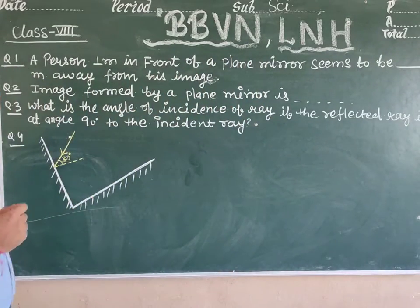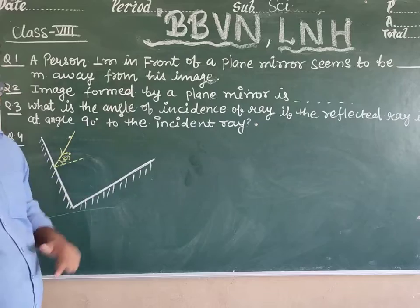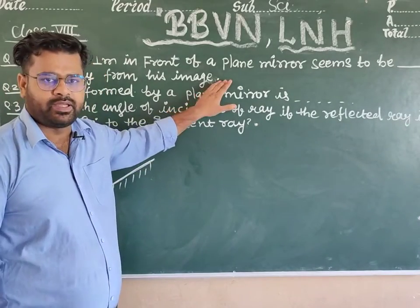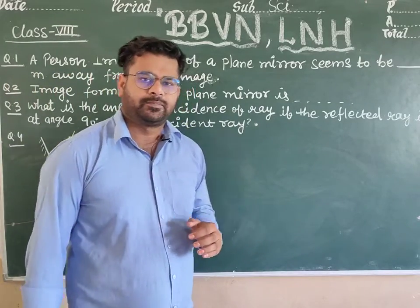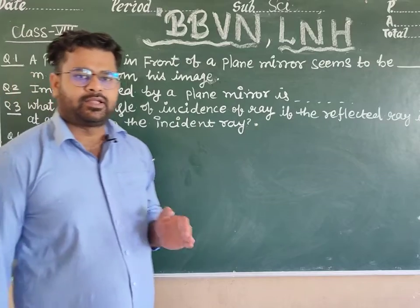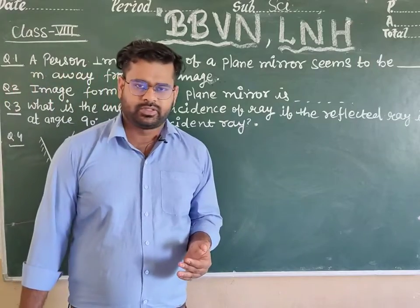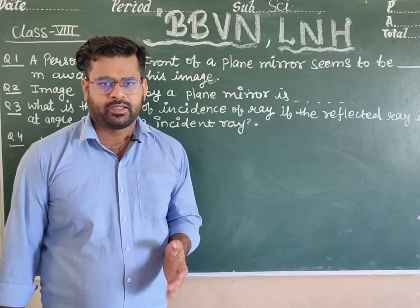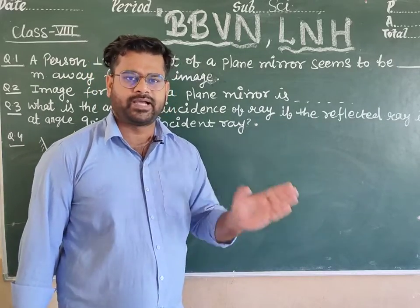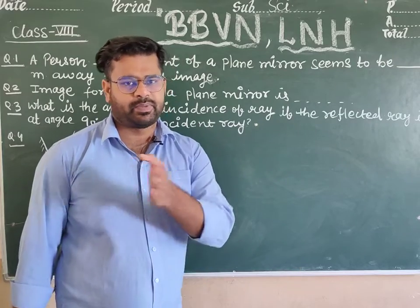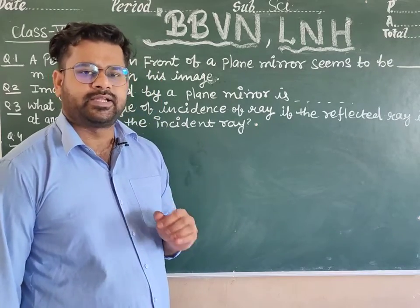So, a person 1 meter in front of a plane mirror — how far does he seem to be from his image? In the previous class, we covered image formation by a plane mirror. The image is behind the mirror, the same size as the object, and the distance of the image behind the mirror equals the distance of the object in front. The nature of the image is virtual.